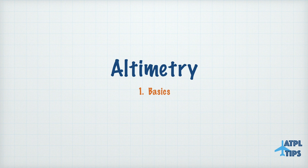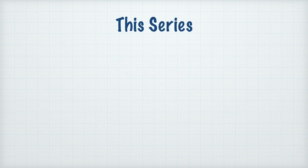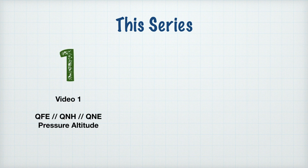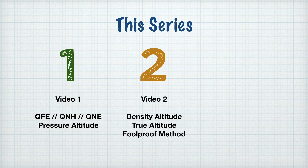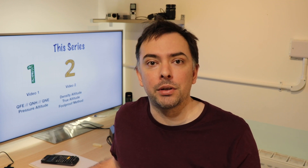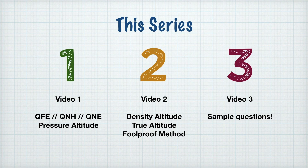Altimetry can be a particularly tricky subject. The way I'm splitting this series up is that in the first video, I'll start with some relatively simple theory that's actually really easy to misunderstand — that's QFE, QNH, and QNE, and the relationship they have with each other. Video two will build upon this foundation to dig into density altitude and true altitude, and I'll show you the method I use to answer sample questions. Video three will be more questions to reinforce this method.